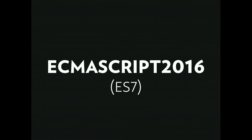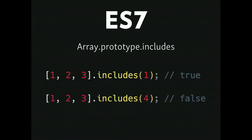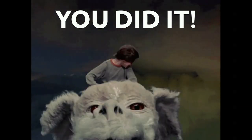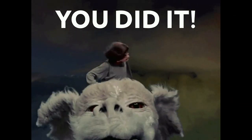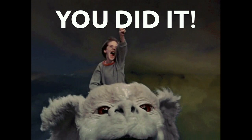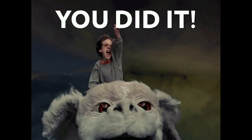I mentioned we're going to talk about ES7 first. We have a couple things: array.prototype.includes — it was originally called 'contains', but MooTools had a contains method, so to not break the web they called it 'includes'. It checks whether something is in an array. Does [1,2,3] include 1? True. Does it include 4? False. We also have a new exponent operator, basically replacing Math.pow — so 3**2 is three to the second power, giving us nine. And guess what? You've already learned ES7.